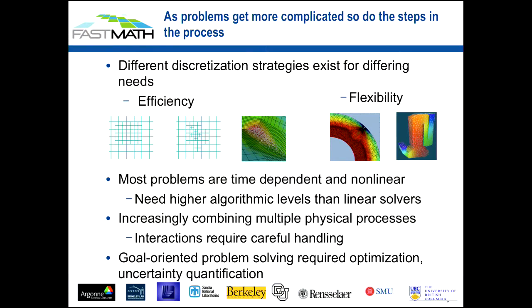Of course, it's much more complicated than that for the problems we're trying to tackle in reality. Different discretization strategies exist for different needs. If you have a simpler geometry like the unit cube, perhaps you can use a Cartesian grid and do block-structured AMR — very efficient because you can represent it with just IJK notation. But maybe your domain is extremely complex; in that case, you might want to use an unstructured grid with triangles, tetrahedra, or hexahedra, where it's more expensive to store that representation but you have much more flexibility.